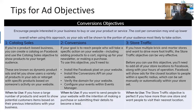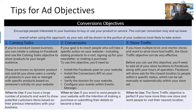The last objective is conversion. If you're really looking for conversions, your main goal is to encourage individuals interested in your product or service to convert. This is all about the cost per conversion — you want to drive that dollar amount down as far as possible to maximize your ROI. There are three types: catalog sales, conversions, and store traffic.